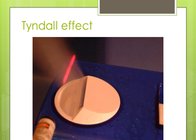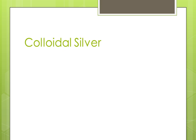Here's a cool picture: a laser beam passing through the steam from a humidifier. You can see the laser beam very clearly where the vapor from the humidifier is present, but you can't see the rest of the beam because it's not being scattered by the air, which is a homogeneous mixture.